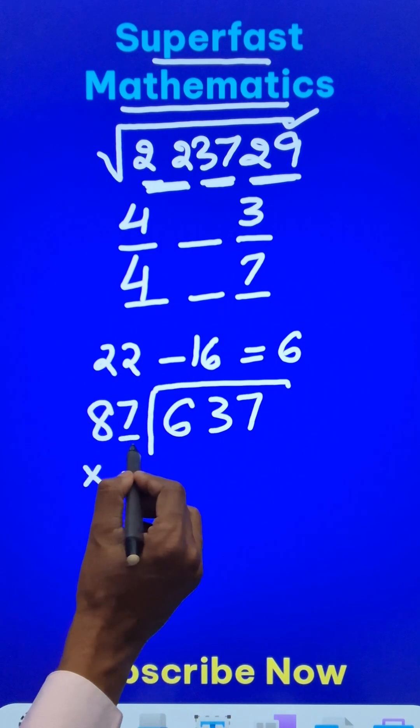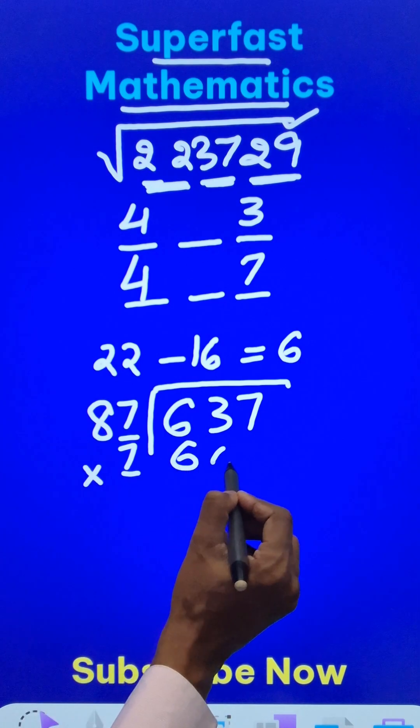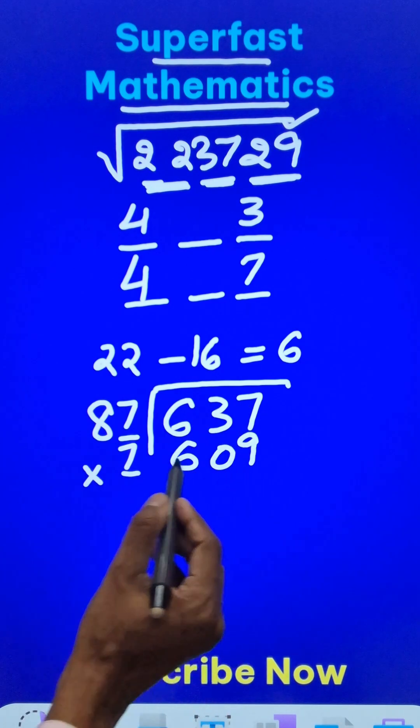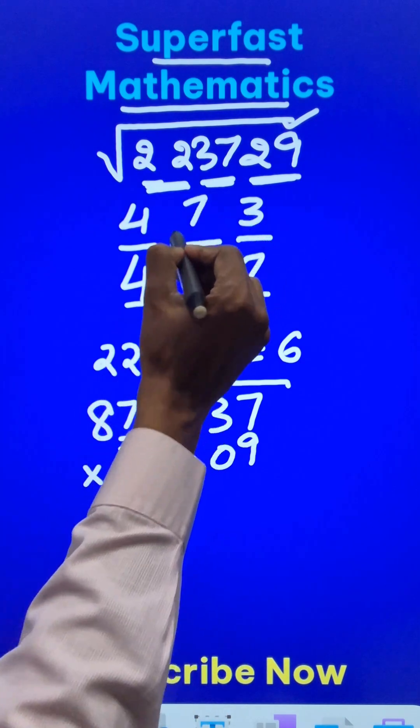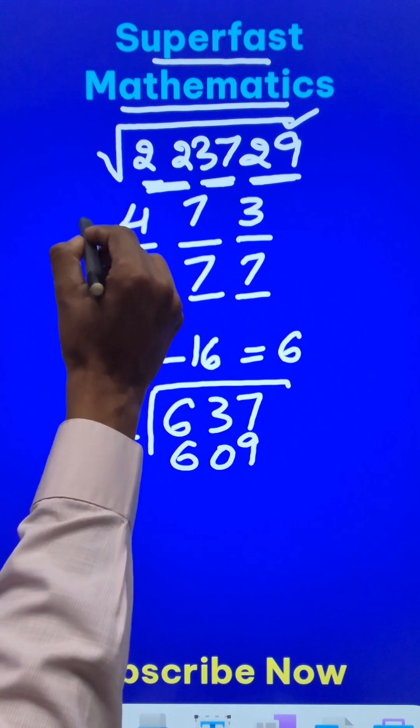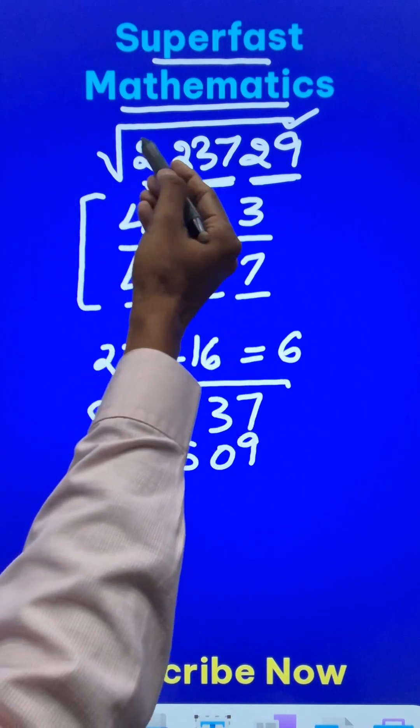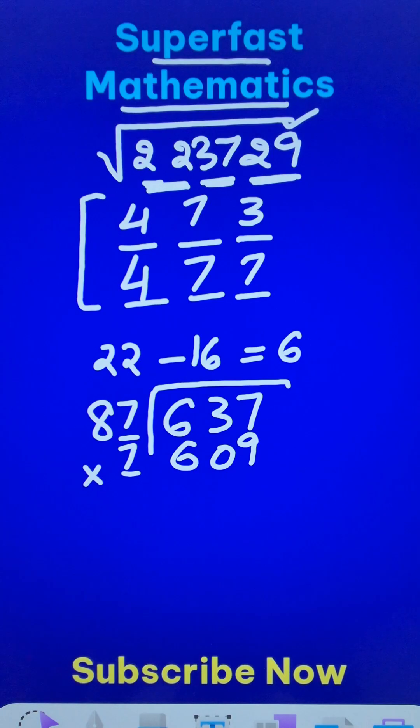And that is 7, because 87 times 7 will give me 609, which is closest to 637, and therefore this number 7 forms the middle digit of my answer. Now either 473 or 477 is the answer for this square root problem.